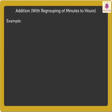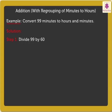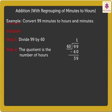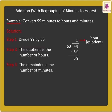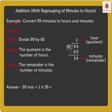Let's look at an example. Let's convert 99 minutes to hours and minutes. Step 1: Divide 99 by 60. Step 2: The quotient is the number of hours. Here, we have 1 as the quotient, which means 1 hour. Step 3: The remainder is the number of minutes. Here, we have 39 as the remainder, which means 39 minutes. Thus, 99 minutes is equal to 1 hour, 39 minutes.